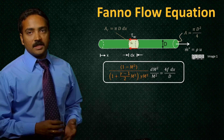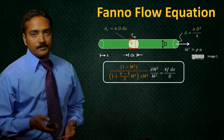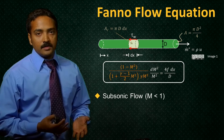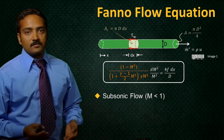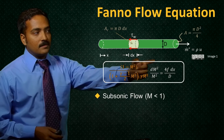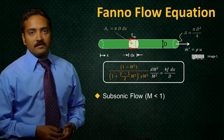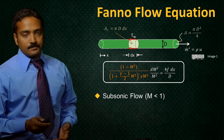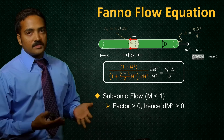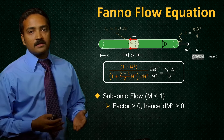Let's now look at the numerator: 1 minus M squared. If we have subsonic flow in the pipe, when M is less than 1, this means 1 minus M squared is going to be a positive number, because M squared is also going to be less than 1. On the right hand side, we just said that the right hand side is a positive value. We've said everything else is positive, and we also determined that 1 minus M squared is positive, which means for this equation to be satisfied, dM squared also needs to be positive. Which means that for subsonic flow, starting at the pipe and progressing downstream, dM squared is going to increase — the Mach number of the flow is going to increase, which means the flow is accelerating.